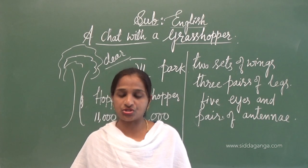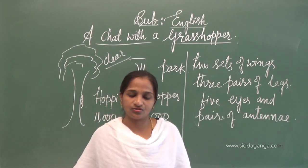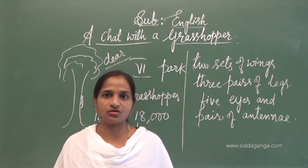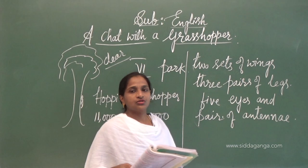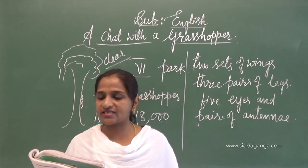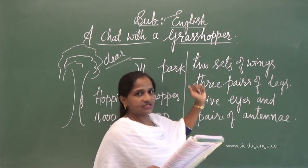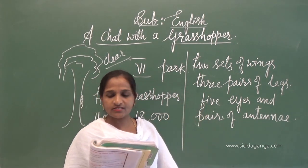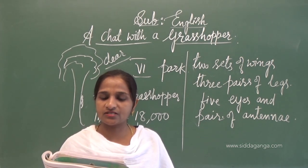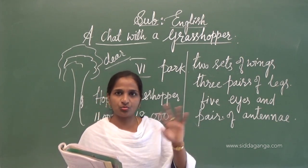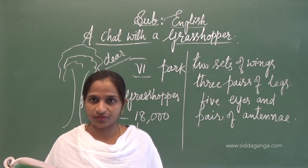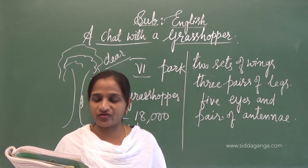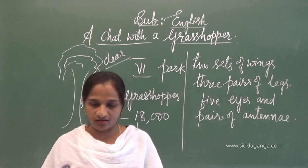You have to go through the question and answer section. Read the questions and discuss the answers. What helps a grasshopper to fly? Two sets of wings. How many wings does the grasshopper have? Two sets of wings. How many eyes does the grasshopper have? Five. How long are the largest grasshoppers? Go through the information boxes. Also, tick the correct answers and say true or false about grasshopper facts.